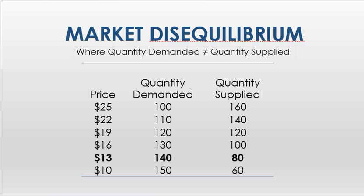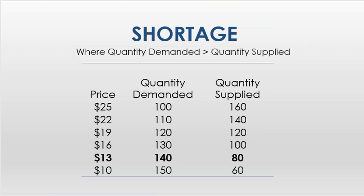Now let's look at the other side. Let's say the price is set below equilibrium — say the price is set at $13. Now our quantity demanded is 140, that's how many people want to buy. But quantity supplied is only 80, which is what sellers want to sell. So quantity demanded is greater than quantity supplied because the price is below equilibrium. We call that a shortage, where quantity demanded is greater than quantity supplied.